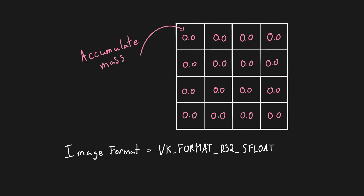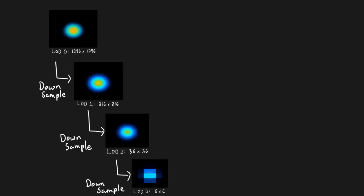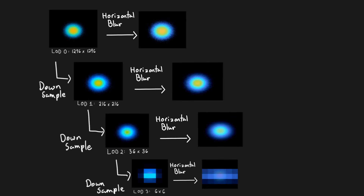This is done by using an image with the format VK_FORMAT_R32_SFLOAT. Each subsequent level of detail is then created by just down sampling the previous. Finally, each LOD image is post-processed by applying a horizontal blur effect, followed by a vertical blur.